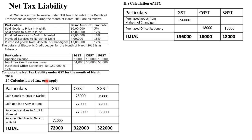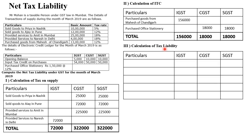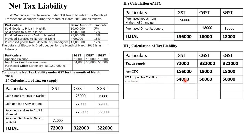Step 1 was calculation of tax on supply, Step 2 was ITC. Step 3 is calculation of tax liability. We note down the tax on supply: IGST 72,000; CGST 3,22,000; SGST 3,22,000. Less ITC found in Step 2: IGST 1,56,000; CGST 9,000; SGST 9,000. Less ITC already given in the question: 54,000; 50,000; 50,000. Less opening balance of electronic credit ledger: 5,000; 10,000; 10,000.